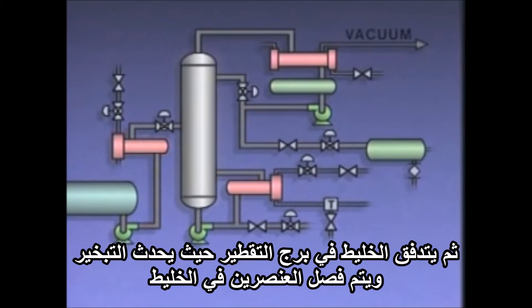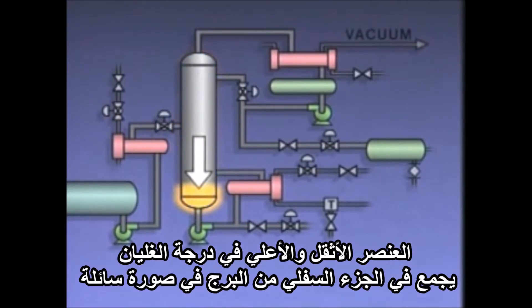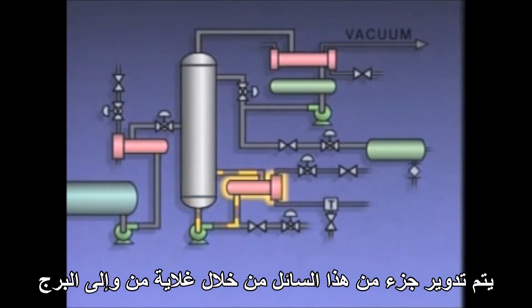The mixture then flows into the distillation column where vaporization occurs and the two components of the mixture separate. The heavier, higher boiling component collects at the bottom of the column as a liquid.